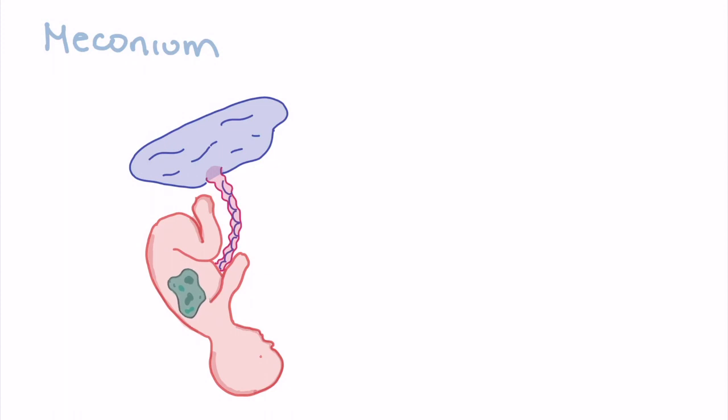In this video we're going to talk about meconium. Meconium is a thick green, brown, blackish substance that makes up the fetal stool. Meconium appears around 10 to 16 weeks gestation in the fetal intestinal tract.